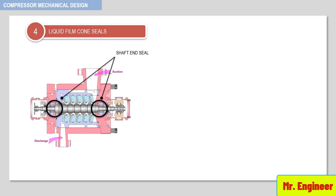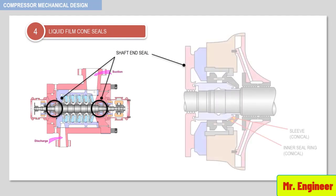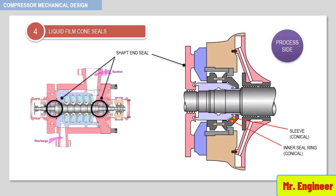The figure shown here depicts a typical liquid film cone seal. The shaft sleeve and the inner sealing ring have a cone-shaped surface. As discussed previously for floating ring seals, the sealant gets contaminated as it flows past the inner seal and contacts the process gas.